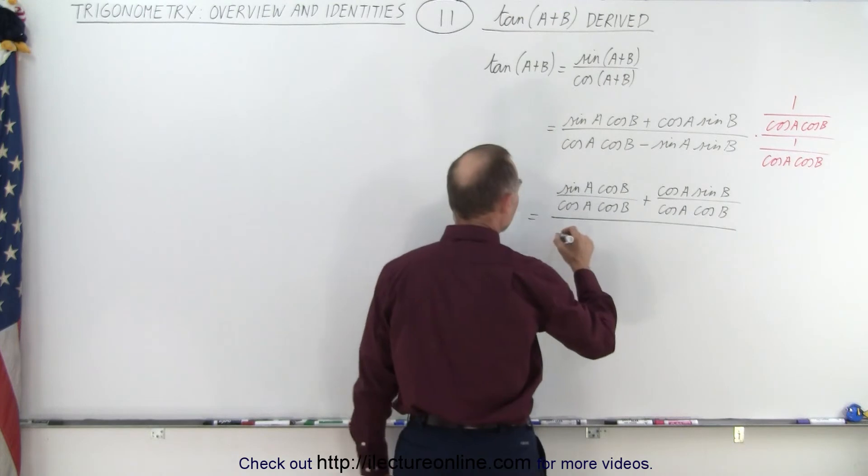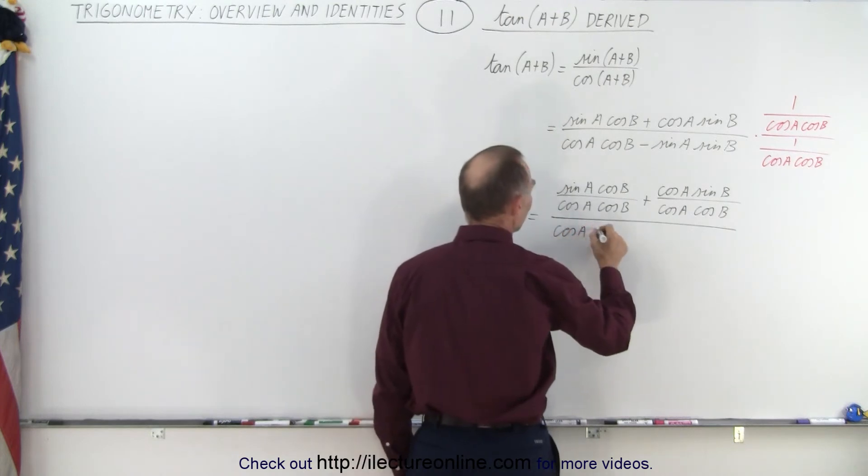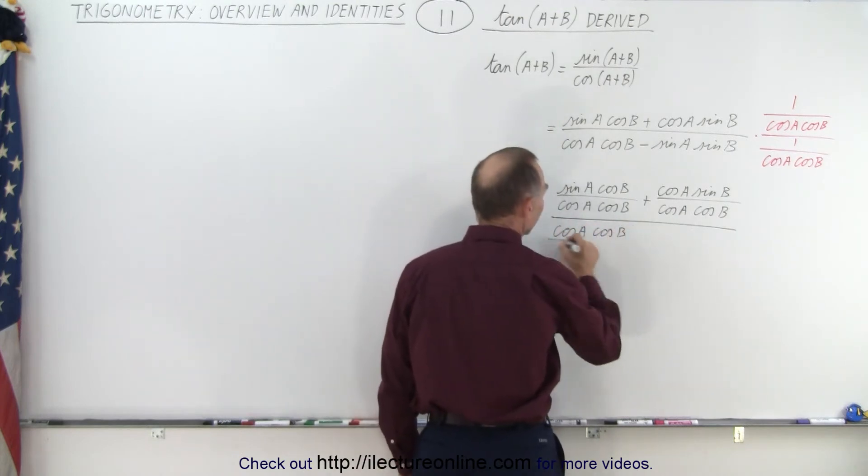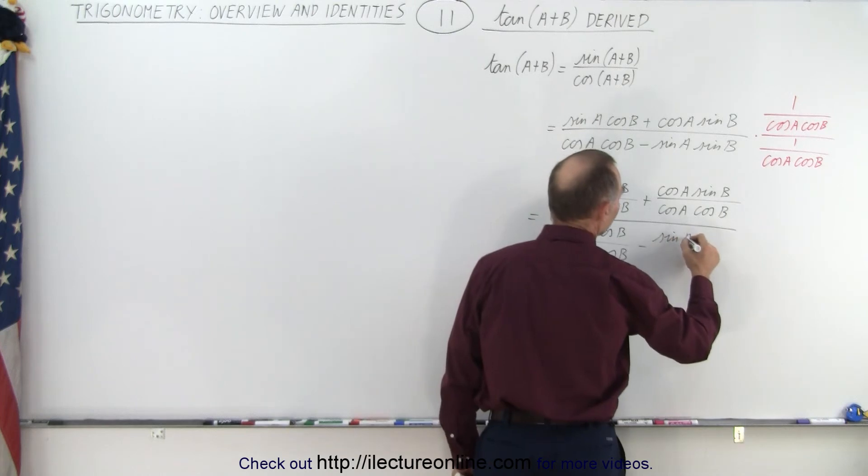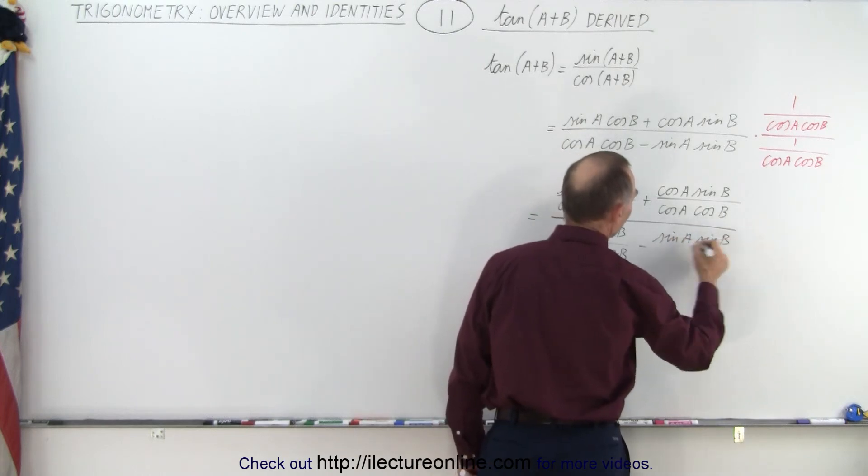So now the same with the denominator. We have the cosine of A cosine B divided by cosine A cosine B minus sine A sine B over cosine A cosine B.